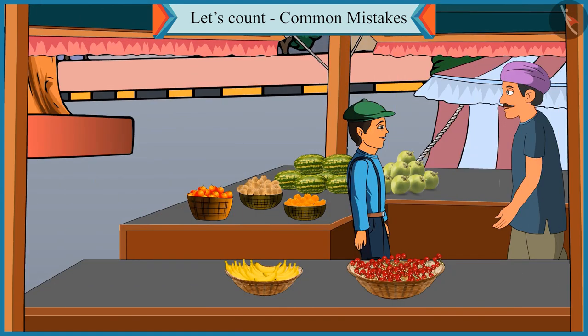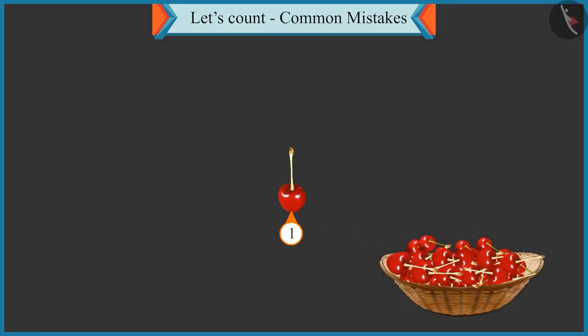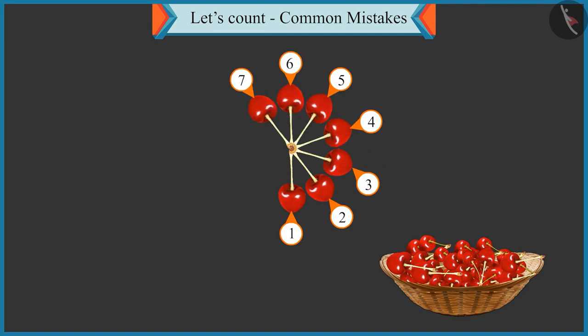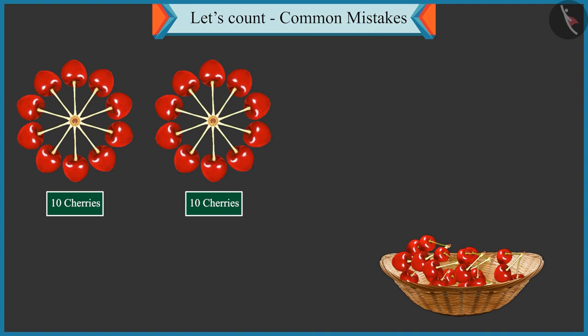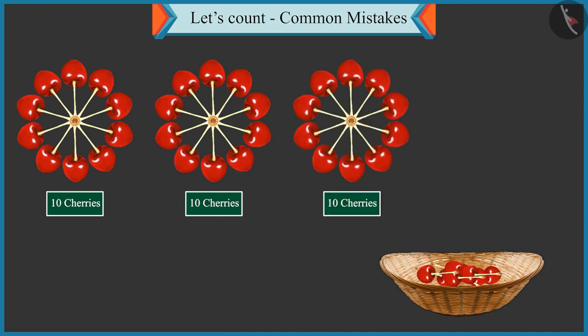Chotu, you know how to make groups of tens. Now count these cherries by making groups of tens. Yes, I will make them uncle. Counting: 1, 2, 3, 4, 5, 6, 7, 8, 9 and 10. First group of 10, second group of 10, and this is the third group of 10.